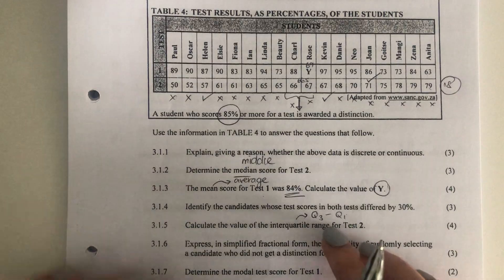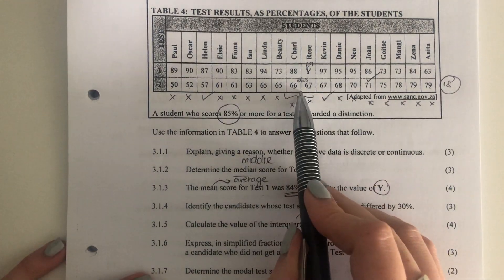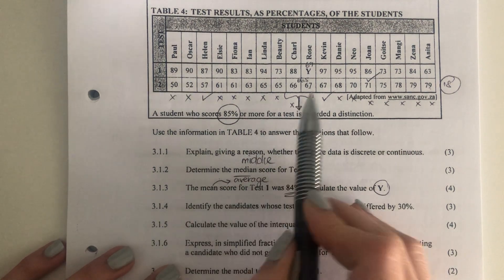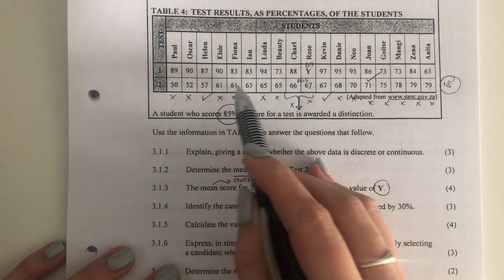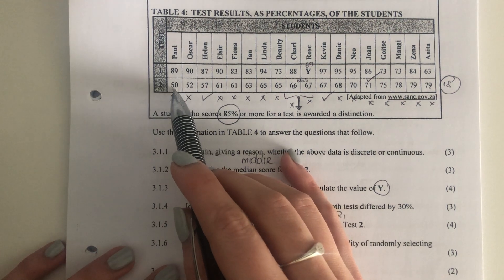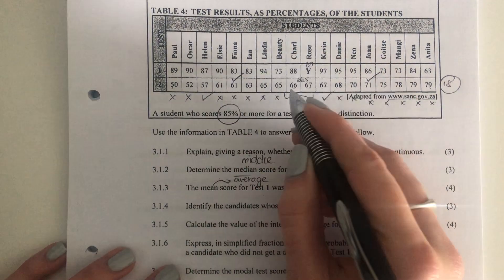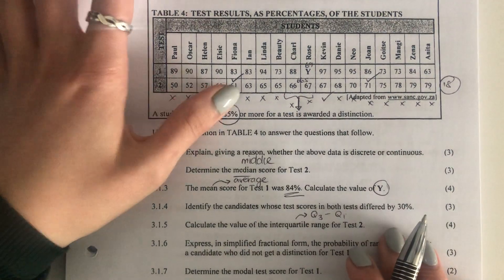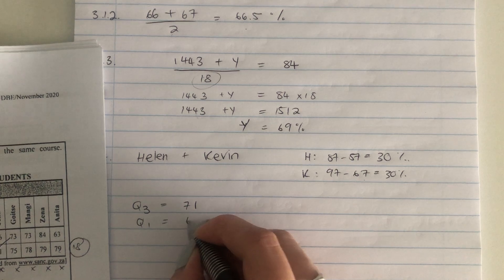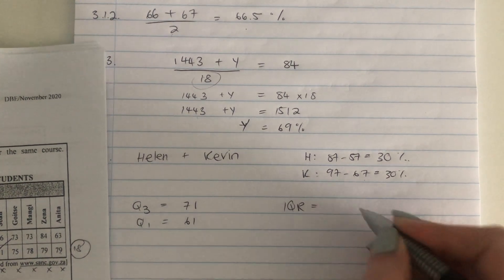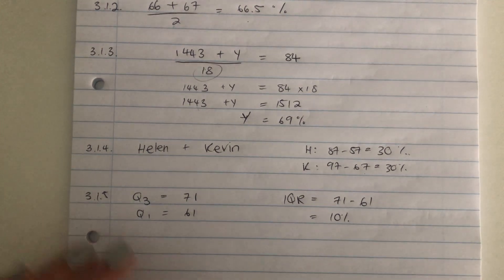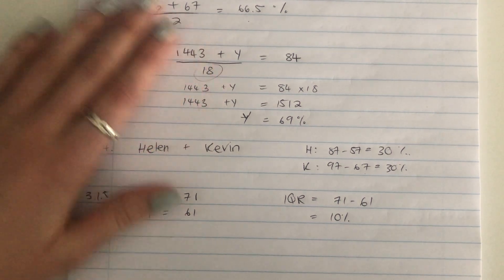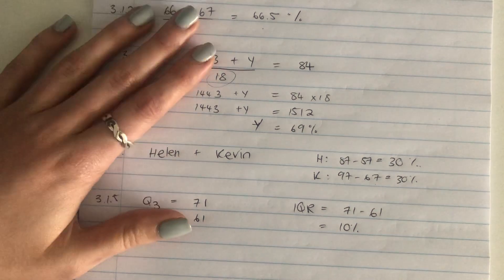Now we do the same thing for Q1 — the median of the points below the actual median. We have 9 points below. 9 divided by 2 is 4.5, round up to 5. Counting to position 5 from both sides confirms it. Quartile 1 equals 61. So my interquartile range is just 71 minus 61, which is 10%. Do you see how important it is to know your definitions in this section? If you don't know your definitions, you start running into trouble.